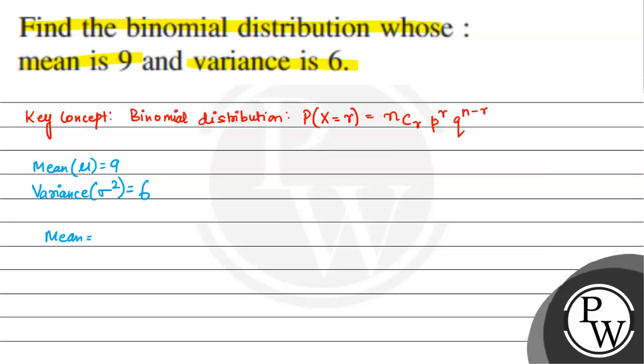Mean ka formula hota hai n multiplied by p, but variance ka formula hota hai n multiplied by p multiplied by q. Mean hai np, n is the number of trials multiplied by number of successes. And variance is number of trials multiplied by number of successes multiplied by number of failures.